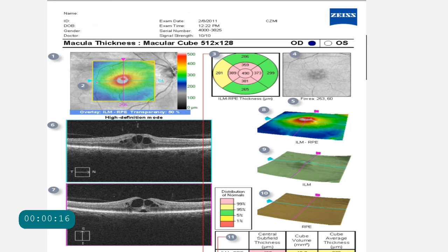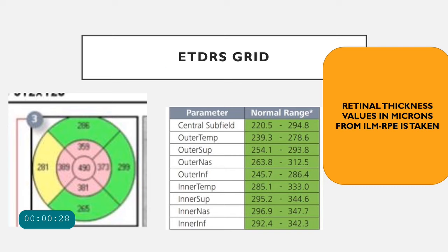After the SLO fundus image and the slice navigator, we have the ETDRS grid. ETDRS stands for Early Treatment of Diabetic Retinopathy Study grid. In this grid, the macular thickness is represented — calculated from the internal limiting membrane up to the retinal pigment epithelium. The ETDRS grid consists of three circles: the outer circle, the inner circle, and the innermost circle. The innermost circle represents the central subfield thickness of the macula. Each circle is divided into four quadrants, giving about nine sectors overall, all representing the thickness of the macula discovered in the patient.